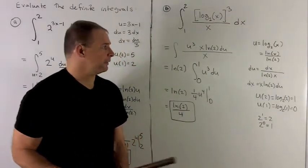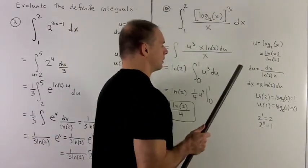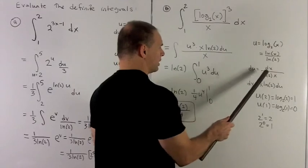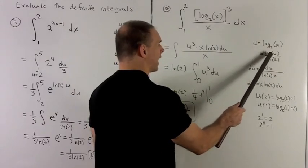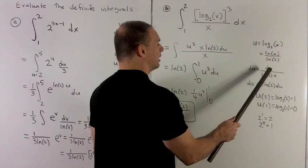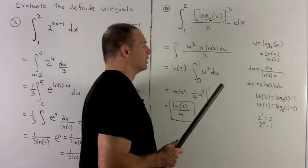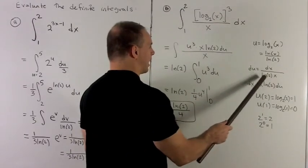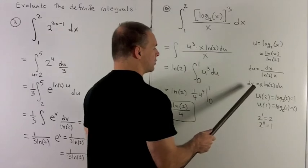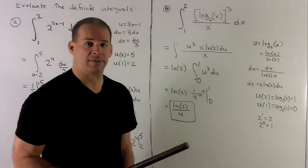I take the derivative of this with respect to x. The natural log of 2 is a number, so I don't worry about it. The derivative of the natural log of x is 1 over x, and then I multiply that by dx. We push everything in the denominator to the other side, and that gives me dx is x natural log of 2 du.